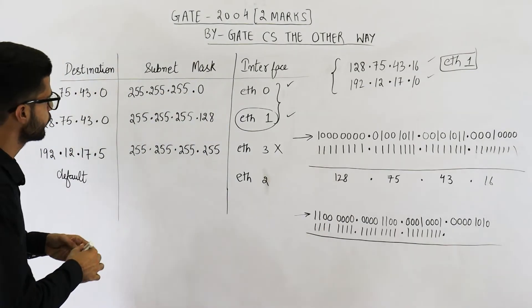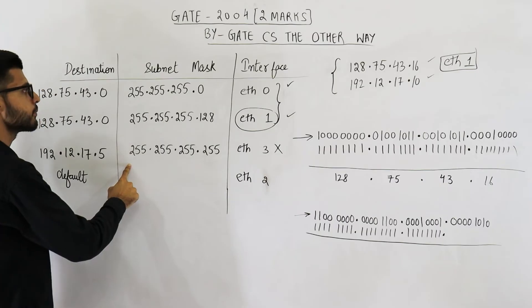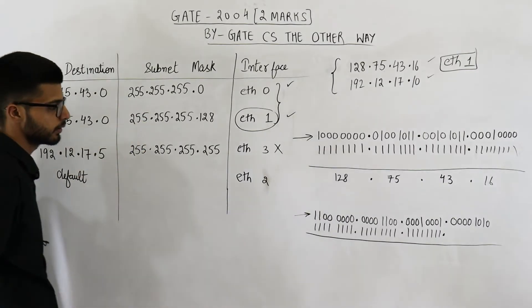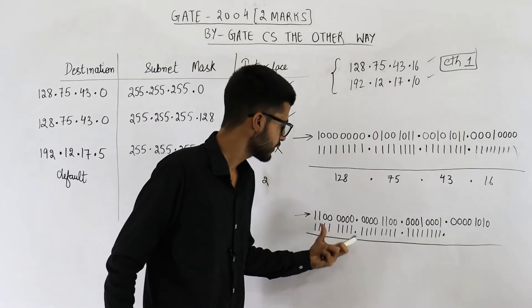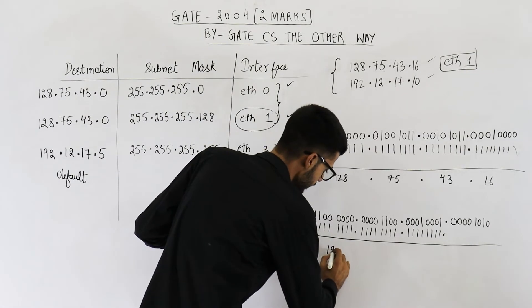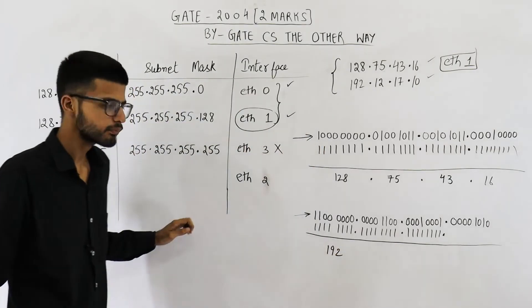See, for all of these three subnet masks, the first octet is all ones. If you just analyze the first octet, when you perform AND, you are going to get 192 only.